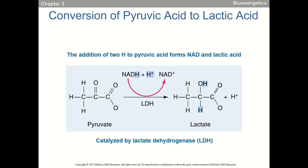If we need energy now and don't have time to make it aerobically, pyruvate via LDH — lactate dehydrogenase — gets converted to lactate. The reason we make lactate is to prolong how long glycolysis can actually go. Now, who's heard that lactic acid causes that burn in your muscles? Most of us — but that is not at all what's happening.